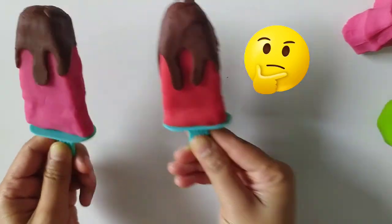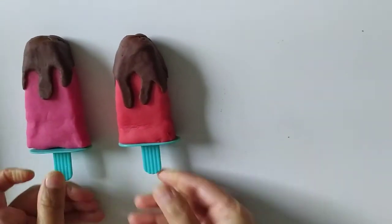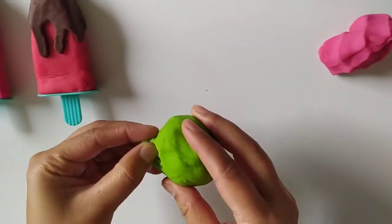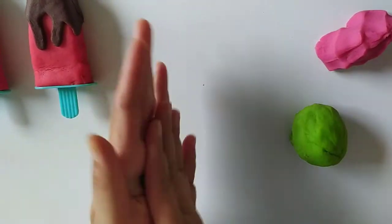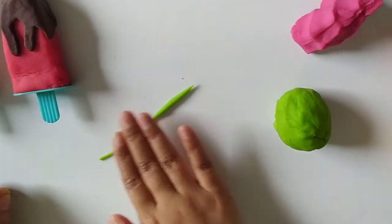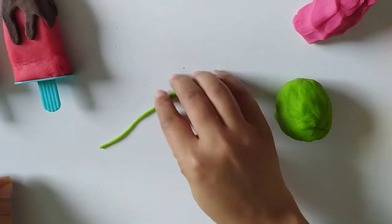Something is missing. Oh yes, some hundreds and thousands! Some candy. So let's make some colorful jimmies and sprinkles. Let's make some green ones.